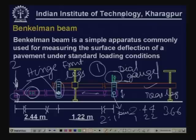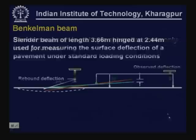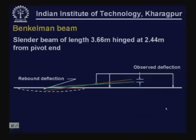When measuring deflections, the connecting pin is removed so the probe can rest freely on the surface and rotate about the hinge point. The principle illustrated shows three supporting legs, one supporting frame hinged to the beam, which rotates about the hinge. Total beam length is 3.66 meters, hinged at a distance of 2.44 meters from the probe end. As the pavement moves up and down at the probe point, the end point moves accordingly, recorded by the dial gauge.